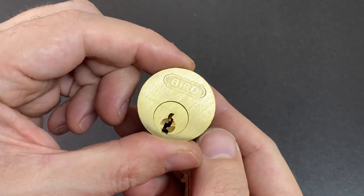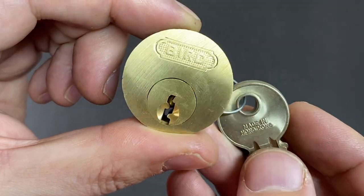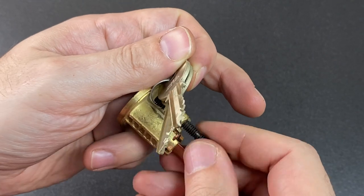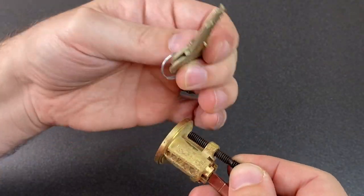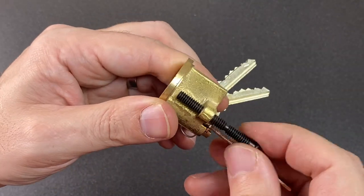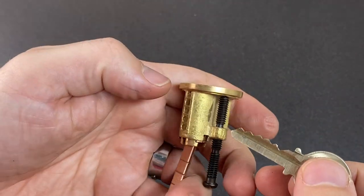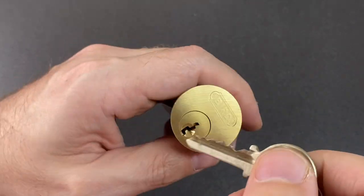And you can see here is the Bird brand lock. It's got very much a Yale style keyway. They attach the keys by putting one of the screws in. It doesn't really do much else. And let's have a look. Is this six pin or five pin? Looks like a five pinner. One, two, three, four, five. Yep.